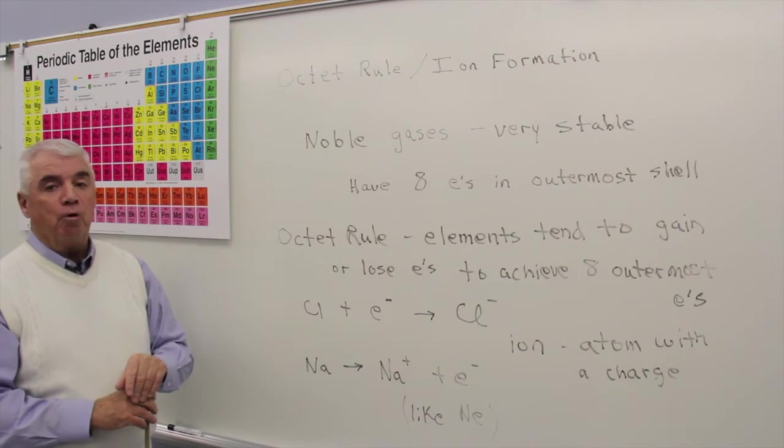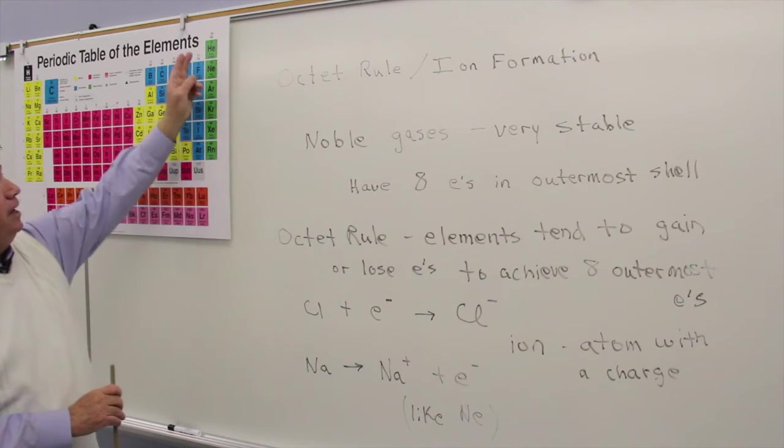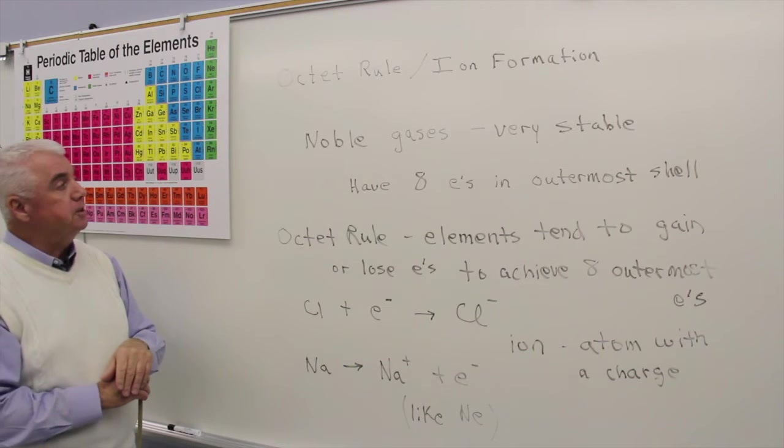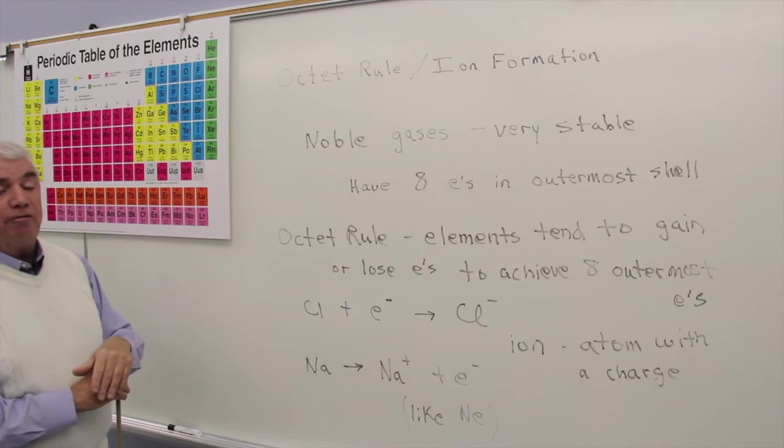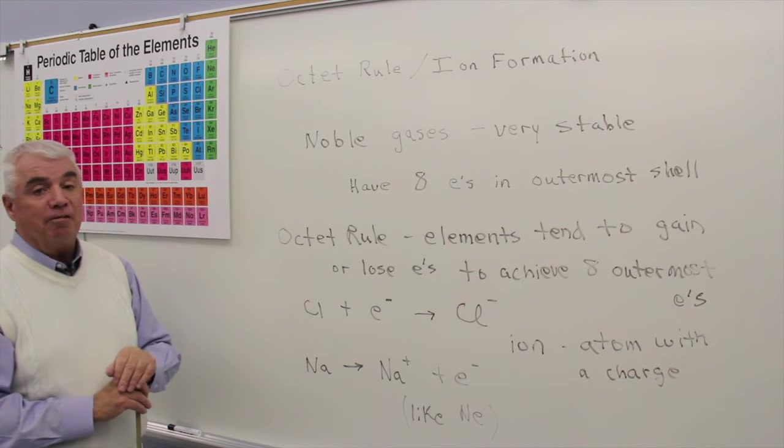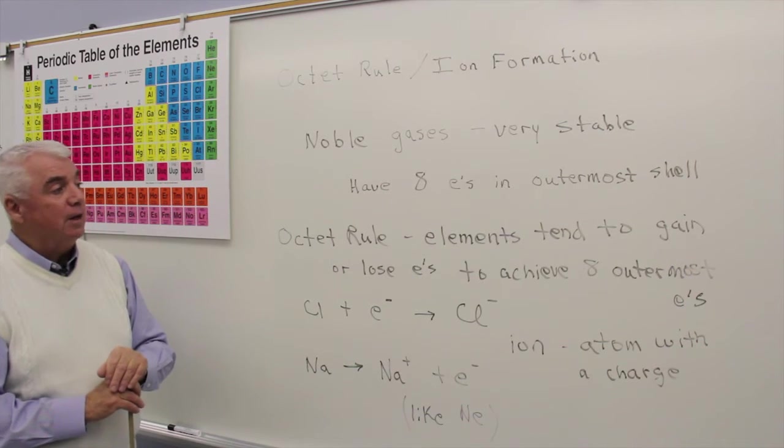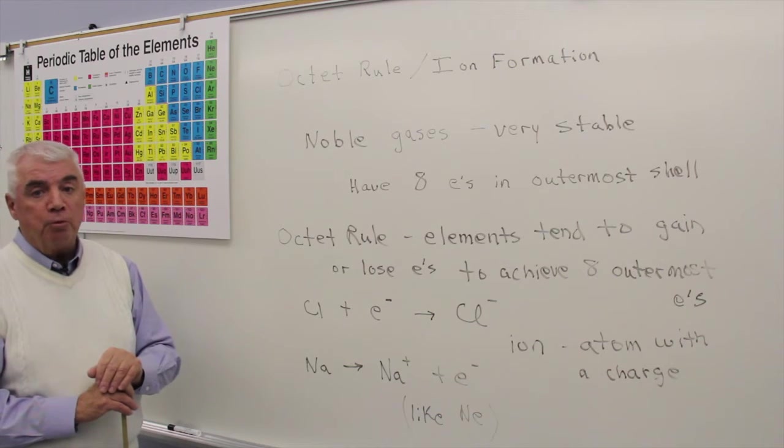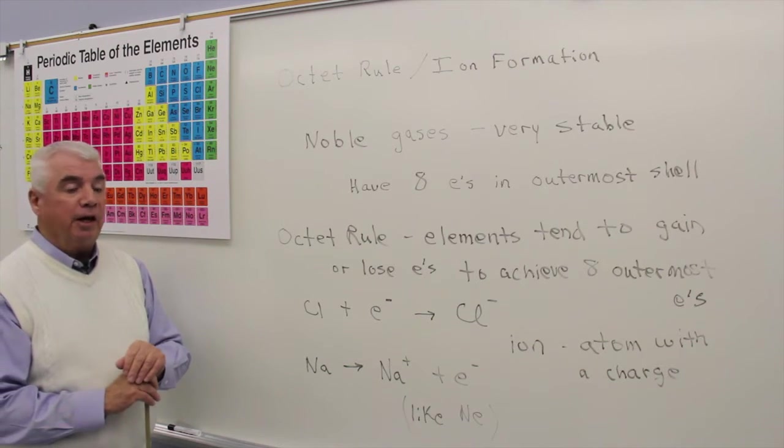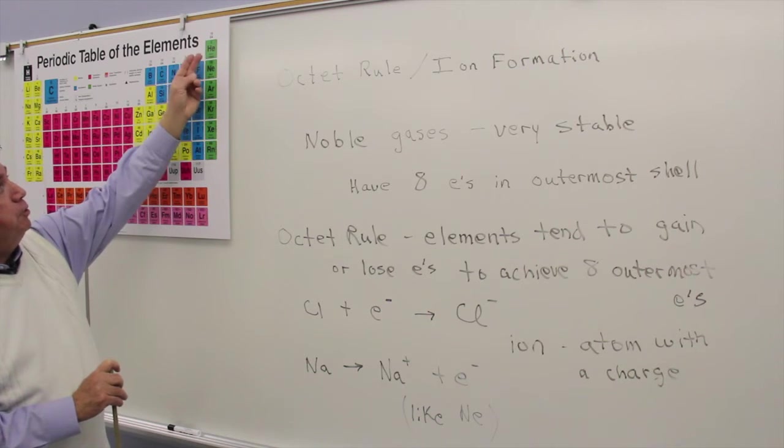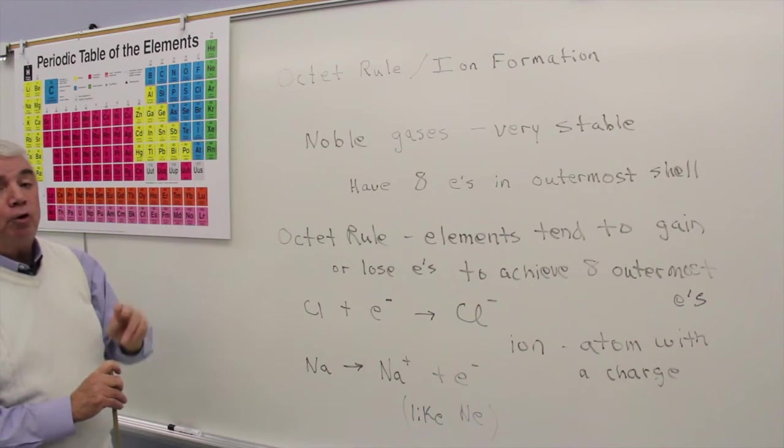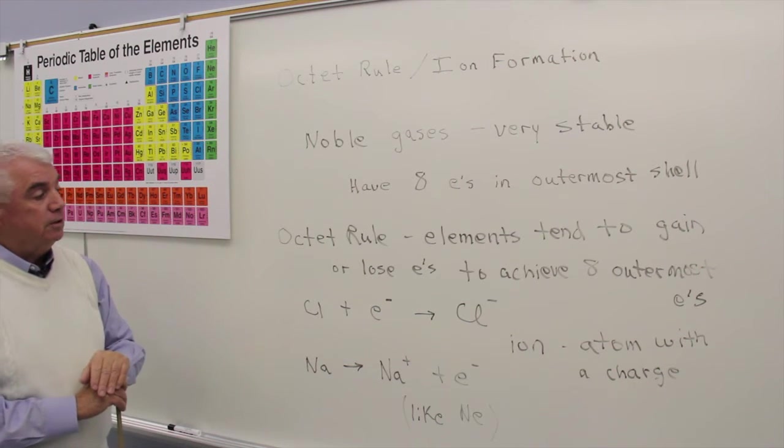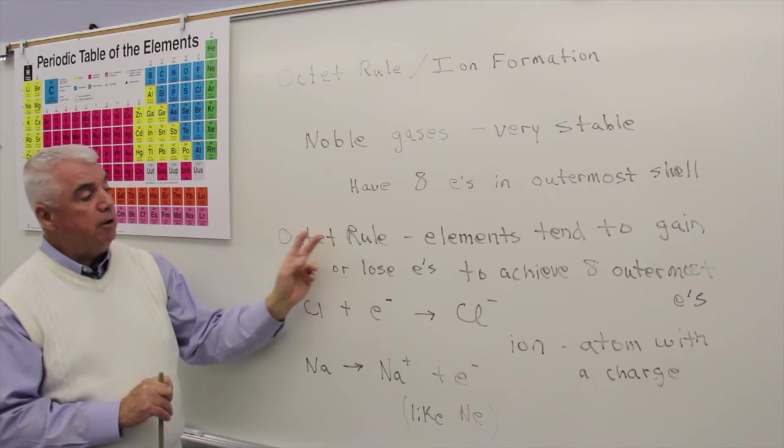Octet rule and ion formation. The noble gases are found here on the very right-hand side of the periodic table. Noble gases are very stable, they're unreactive, very happy the way they are, and we believe it's the number of electrons in their outermost shell that conveys that stability. With the exception of helium, all of the other noble gases have eight outermost electrons, and that's given rise to what's called the octet rule.